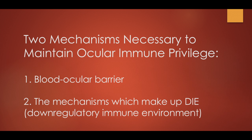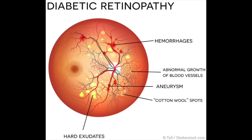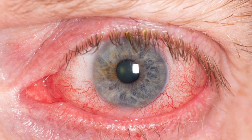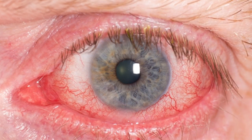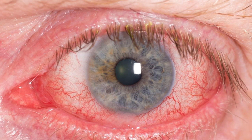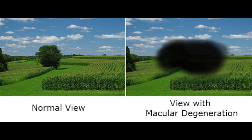Under certain conditions, when there is a malfunction in either one of these two mechanisms, ocular immune privilege can be lost. For example, a dysfunction or breakdown of the blood-retinal barrier leads to diabetic retinopathy or cystoid macular edema. A loss of the Down Regulatory Immune Environment can lead to many forms of uveitis or even cause age-related macular degeneration.